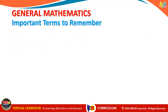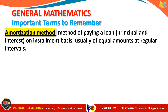These are the important terms to remember before we solve problems involving Business and Consumer Loans. First, we have the amortization method. It is a method of paying a loan which includes principal and interest on an installment basis, usually of equal amounts at regular intervals.